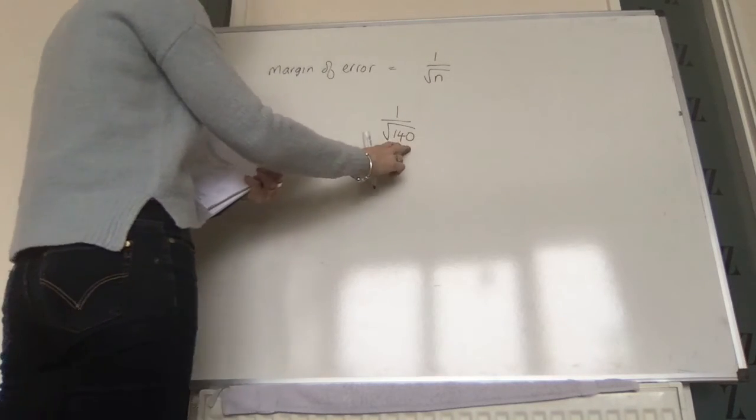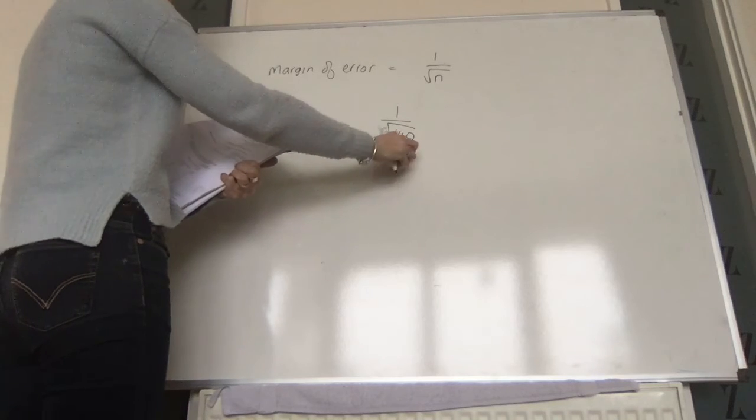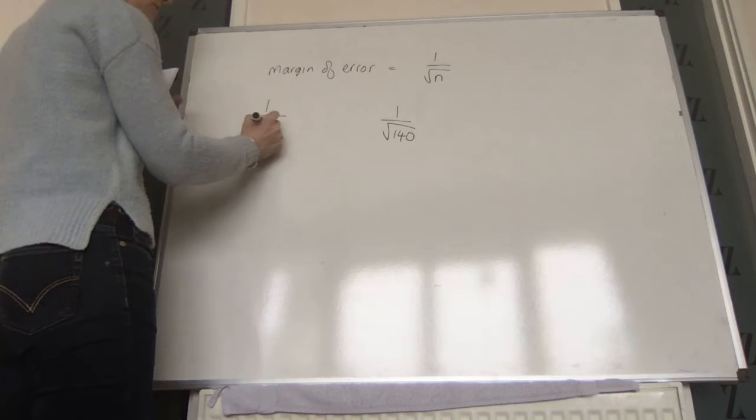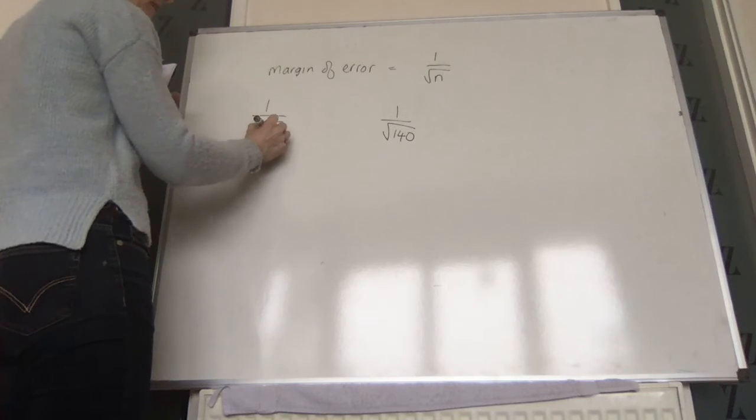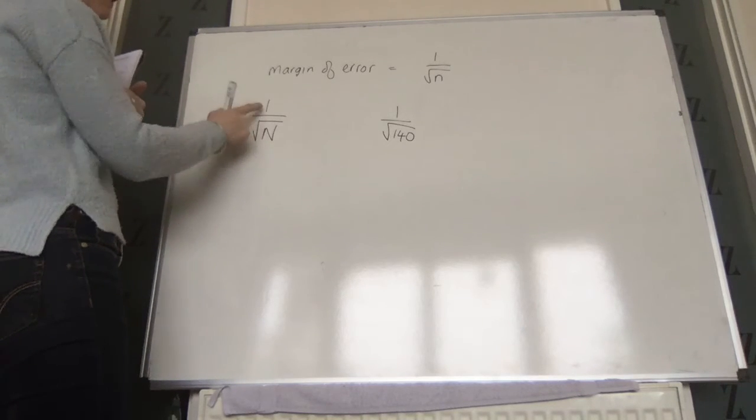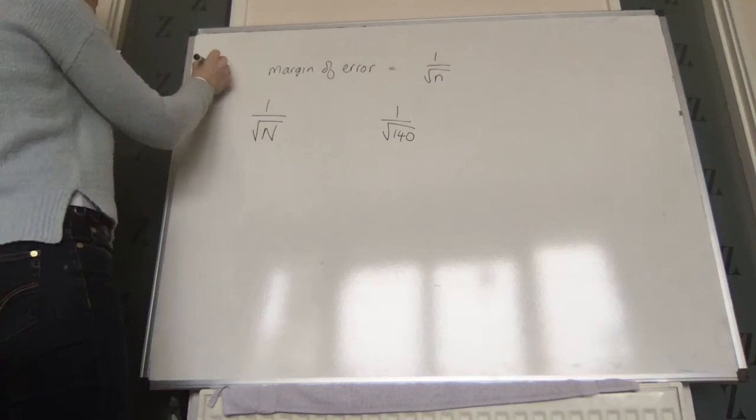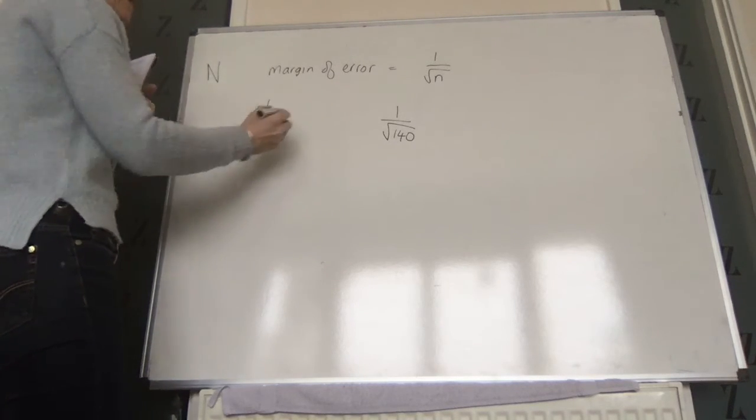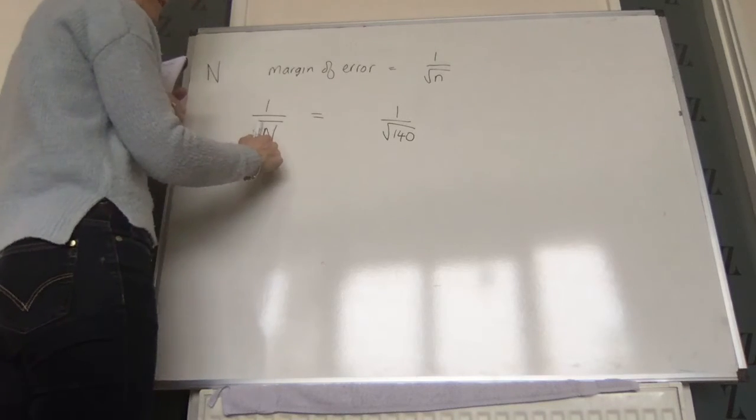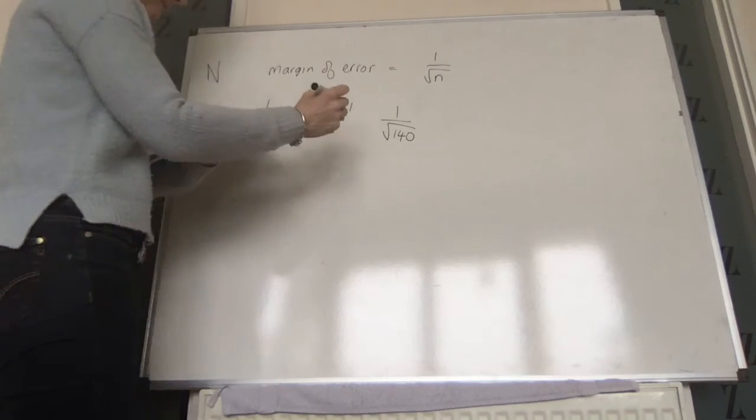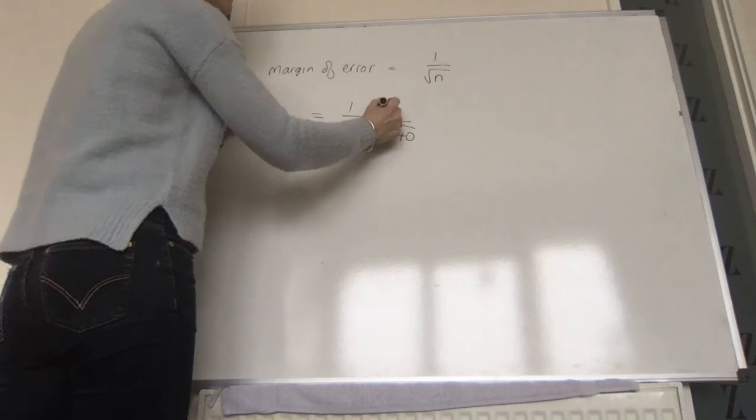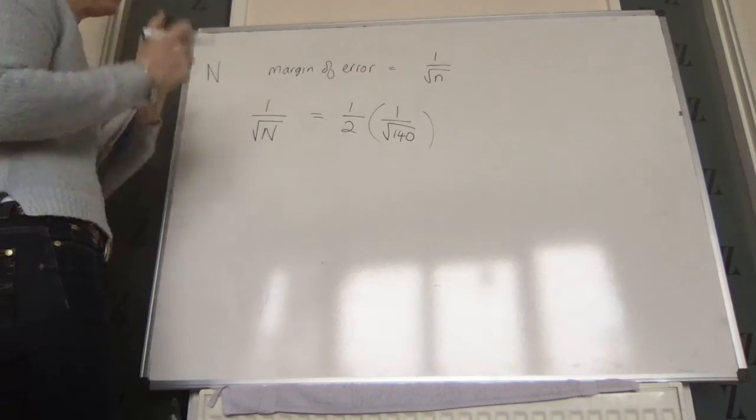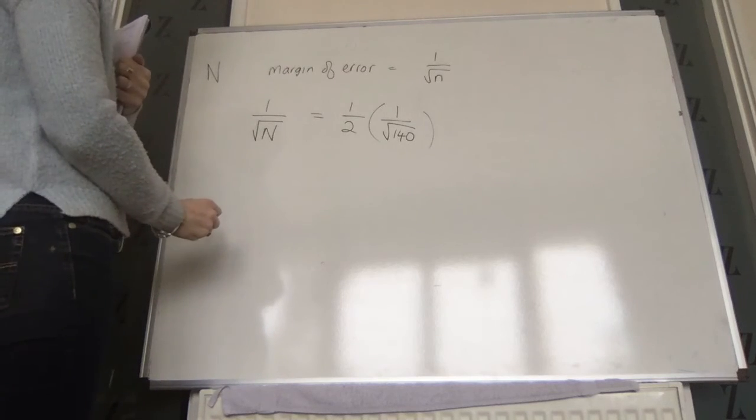We want to know what value of n will give us a margin of error. So if we use a new sample size n, our new margin of error is 1 over root n. And we want that new margin of error to be half of the original margin of error. Now you need to find n.